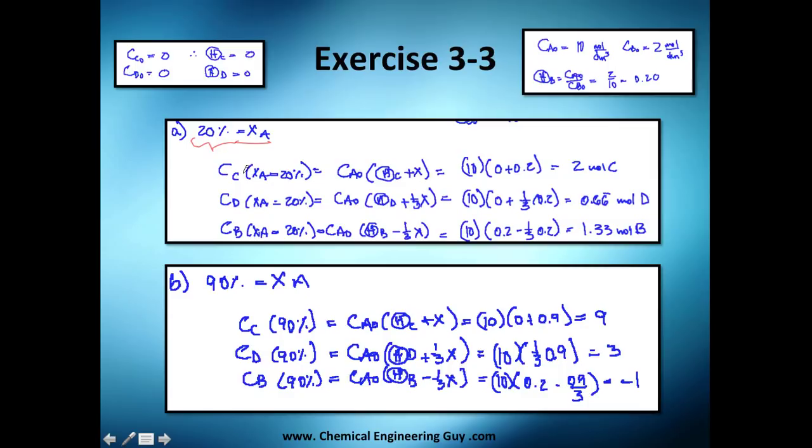20% conversion. Let's calculate the one of C. These two are products and this is my reactant. When we got 20%, we got the initial concentration times this value here. Initial concentration of A is 10, this theta function is 0, and x is 20%, or 0.2 in fraction. So of course, you're going to get two moles of C. We do the same for D. This 10 times 0 because we have no initial concentration of D, and one third due to the stoichiometric values times 0.2. You get this.